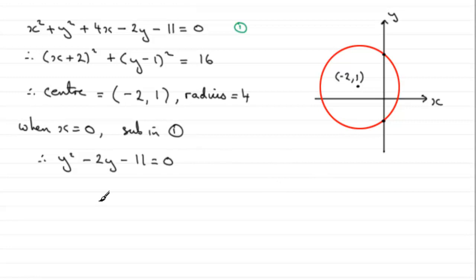So remember the quadratic formula then, if we've got a quadratic equation, normally it's in the form ax squared plus bx plus c equals 0, but in this case it's in terms of y. So we can say that we've got a quadratic equation ay squared plus by plus c equals 0.